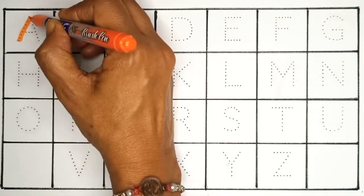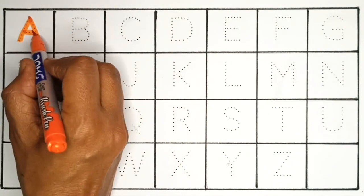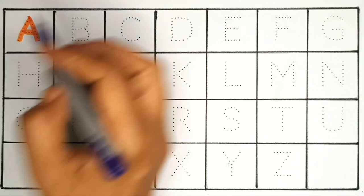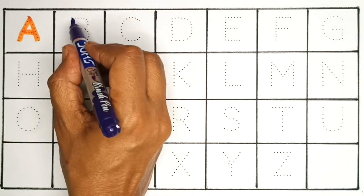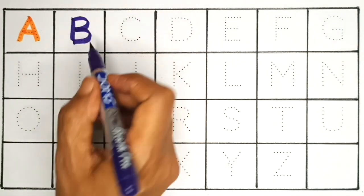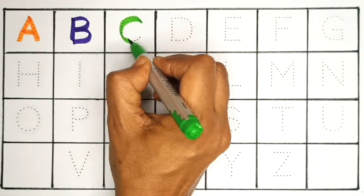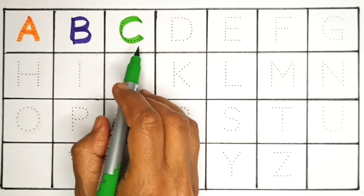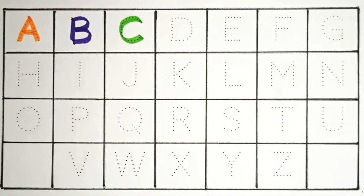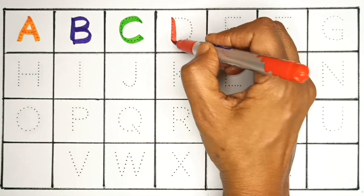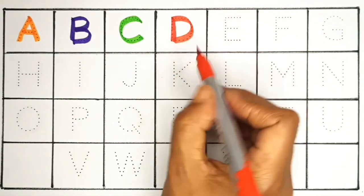A, A for apple. B, B for ball. C, C for cat. D, D for dog.